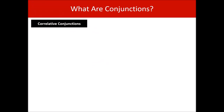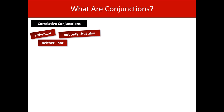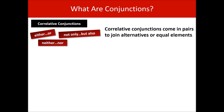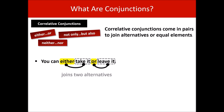Let's move on to correlative conjunctions. Some examples: either/or, neither/nor, not only/but also — these are the three most common. Correlative conjunctions come in pairs to join alternatives or equal elements. You can either take it or leave it — 'either/or' is our correlative conjunction, linking two alternatives: take it or leave it.